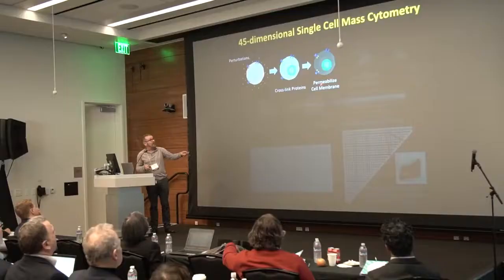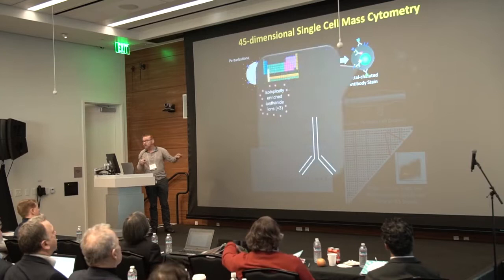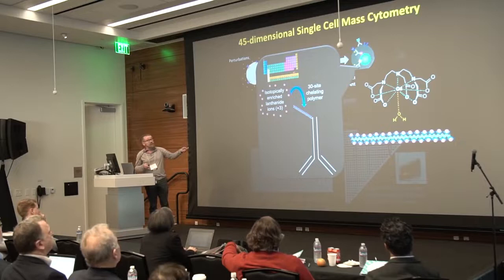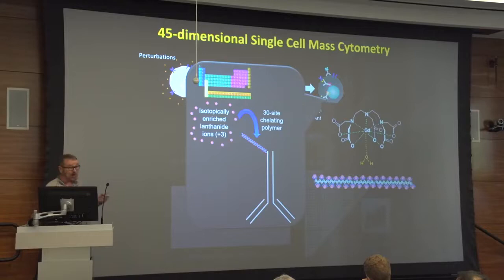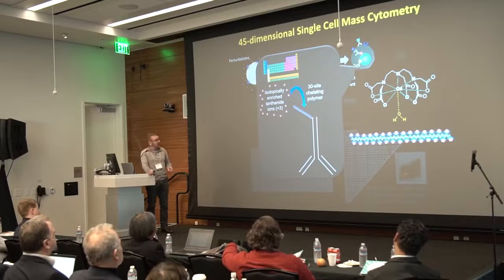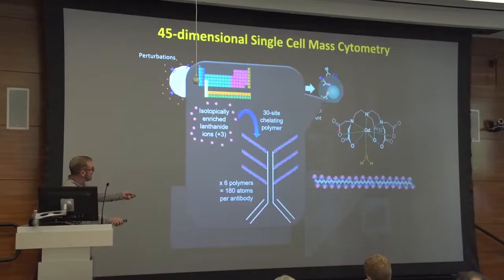We cross-link the cells primarily with paraformaldehyde, then permeabilize the cell membrane. For this high-dimensional analysis we use metal-chelated antibodies. We start with the antibodies, add a chelator cage that can capture a 3+ ion — primarily isotopes from the lanthanide series, which very easily form 3+ ions and offer about 30 to 35 commercially available isotopes. We put these onto a polycarbon backbone attached chemically to the antibody itself. You can get about 180 atoms of any given isotope per antibody — remember that number because it'll become important later. So now we have a label, up to 45 different labels, creating validated panels of antibodies.